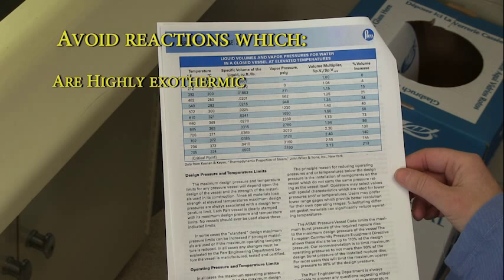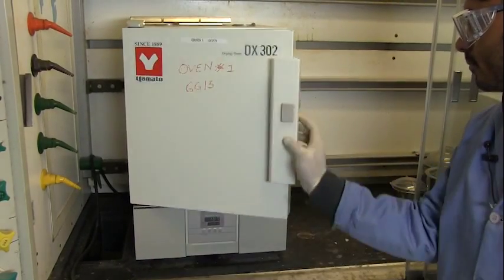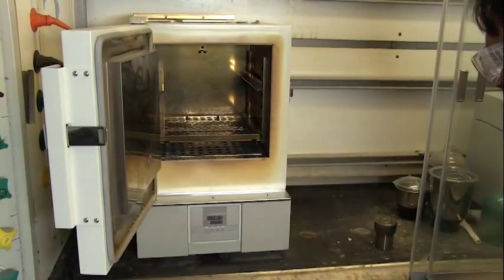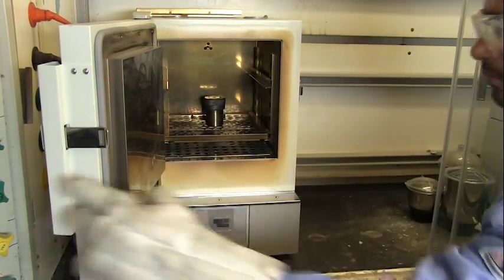Avoid reactions which are highly exothermic or which may be expected to release large volumes of gas. Heating chemicals inside a closed vessel in an oven can result in some of the highest gas or supercritical fluid pressures encountered in a laboratory.